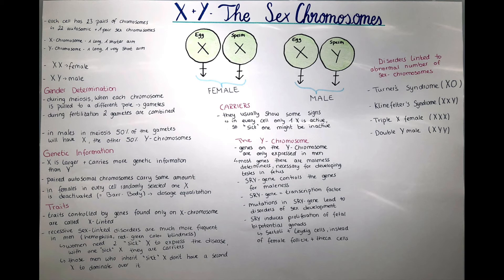Now let's talk a little bit more about the Y chromosome. Genes on the Y chromosome are only expressed in men. Most of the genes that are located on that chromosome are so-called maleness determiners, which are necessary for developing the testes in fetuses. There's a gene within the Y chromosome called the SRY gene, which controls these genes for maleness. The SRY gene is a transcription factor, so it can enhance the expression of certain genes and can decrease the expression of other genes.